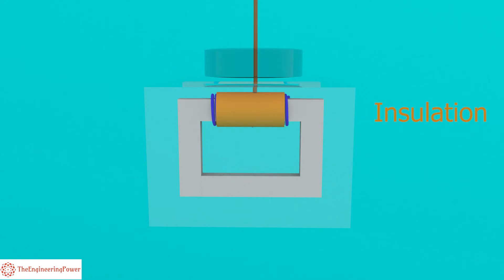First the secondary LV winding is wrapped around the core. After that insulation is added on the secondary winding. Above the insulation the primary HV winding is wrapped.